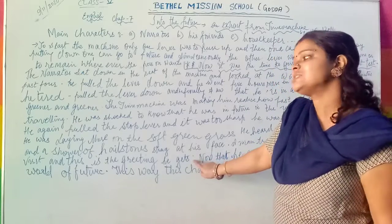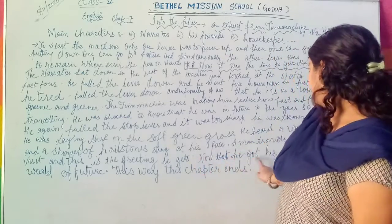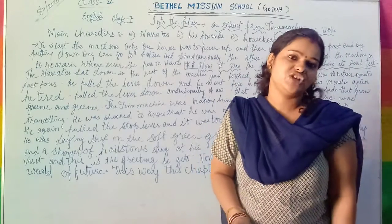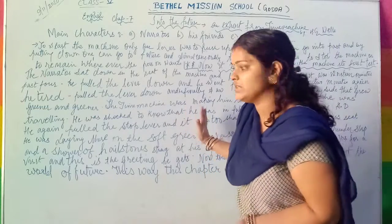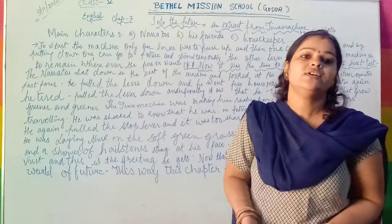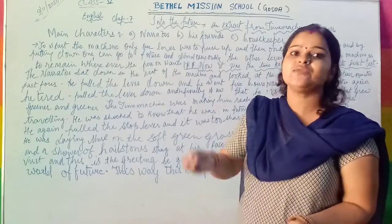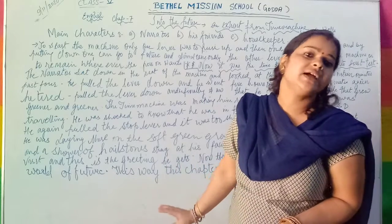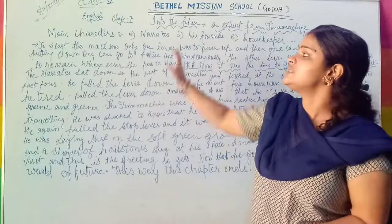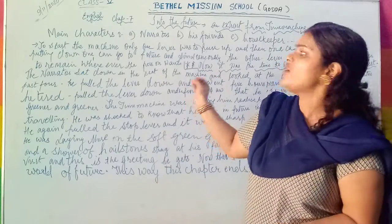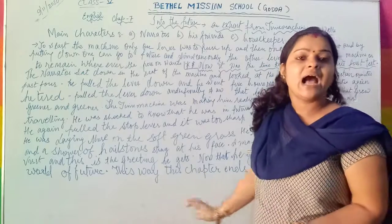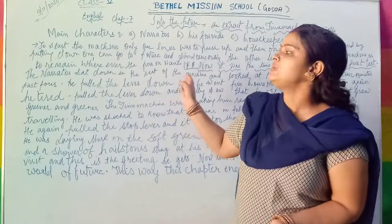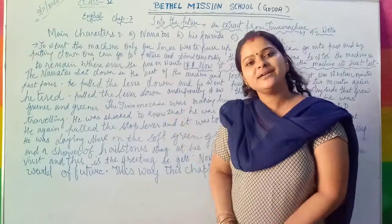This was the experience which the narrator expressed in this chapter. At the very last of this chapter, we get to know that the time machine really worked. By pulling the lever, he had reached a future place where there was greenery all over and he had arrived in the world of the future. Here the chapter ends. I hope you have understood what the author wants to describe. Please go through the word meanings and learn them. Thank you.